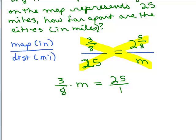And 2 and 5 eighths, I'm going to write that as, well, I have to do 8 times 2, is 16 plus 5, 21 eighths, okay.